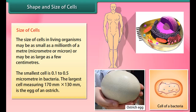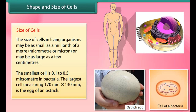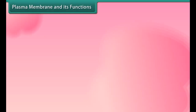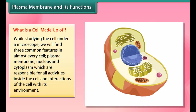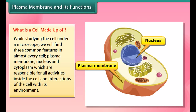The size of cells in living organisms may be as small as a millionth of a meter (micrometer or micron) or may be as large as a few centimeters. The smallest cell is 0.1 to 0.5 micrometers, found in bacteria. The largest cell, measuring 170 mm × 130 mm, is the egg of an ostrich.